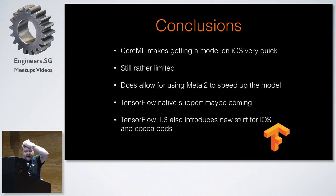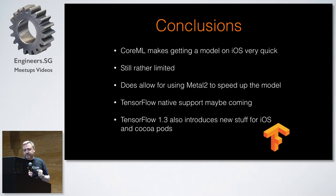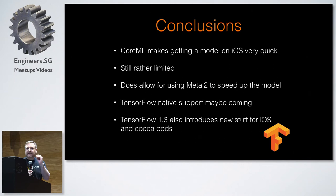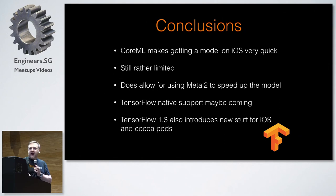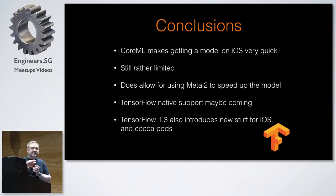To sum it up: CoreML makes getting a model onto iOS very quick, and I think it's going to get better over time — we'll be able to convert from Keras and TensorFlow more easily. It is still rather limited. If you want really small or really optimized models, you're definitely better to go Andrea's way. The cool thing is it's all running on the Metal 2 framework, using the GPU in your iPhone. I think we're going to see much more powerful GPUs in the next generation iPhones, and with Qualcomm's chipset for Android as well. More and more, there's no point pushing to the cloud if you can do it on the phone — quicker, no bandwidth cost.